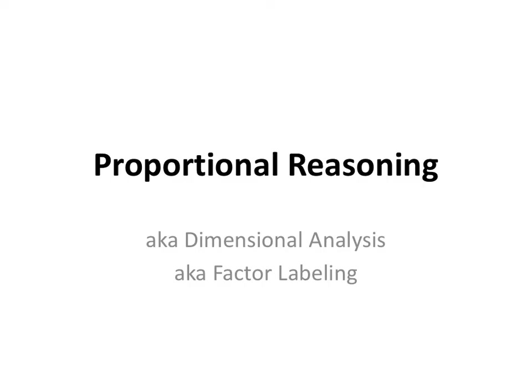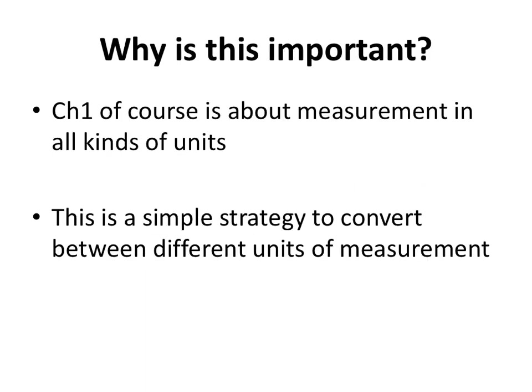In this video lesson, we're going to introduce a very simple but important strategy called proportional reasoning. You may hear other teachers refer to this as dimensional analysis or factor labeling, particularly in a science or chemistry class. In Math 10, this topic is very important because chapter 1 of this course is all about measurement in different kinds of units, and proportional reasoning is a simple strategy to convert between different units of measurement.